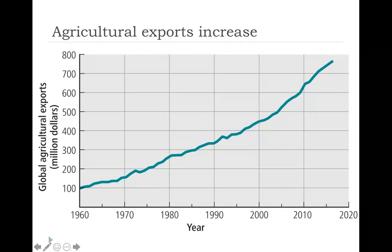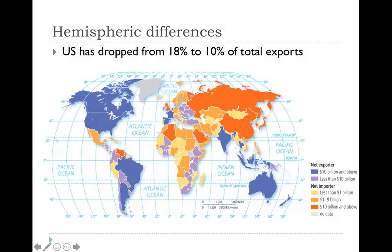Here we look at agricultural exports and the increase — this is global agriculture. You can see from just 1960 up to roughly today just how much agriculture and the export of agriculture has increased over the years — quite a bit in that amount of time. We can also look at hemispheric differences. The United States has dropped from 18% down to 10% of our total exports being agriculture-based, but we still rank in the highest category as net exporters of $10 billion and above. At one point, the United States was the number one exporting country for agricultural products in the world, and we're hovering in that top five range right now.